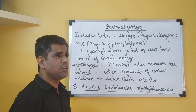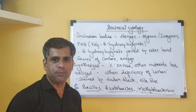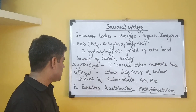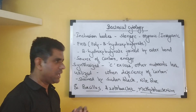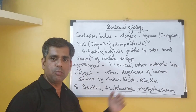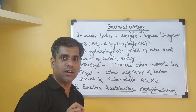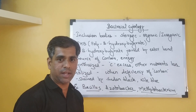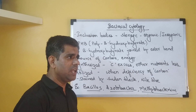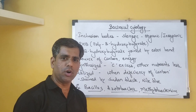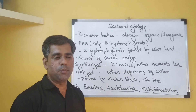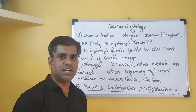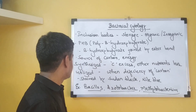The PHB granules are very difficult to stain, so in typical light microscopy you cannot observe them unless you stain them with dyes like Sudan Black or Nile Blue, which will help in locating the presence of these inclusion bodies. In electron microscopy, these inclusion bodies may appear as empty holes, possibly because the solvents used for making the slides dissolve these inclusion bodies.